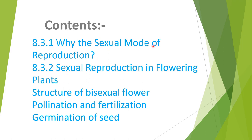First, why the sexual mode of reproduction. Second, sexual reproduction in flowering plants — structure of a bisexual flower, pollination and fertilization, and after that germination of seed.